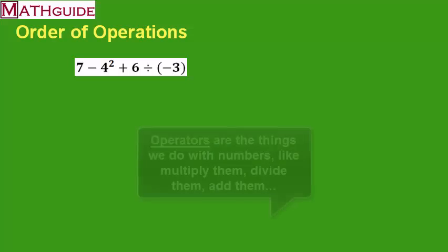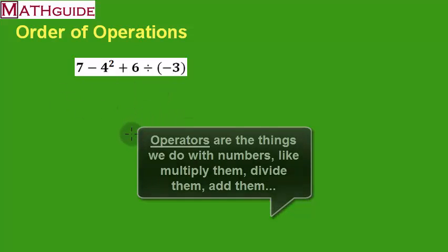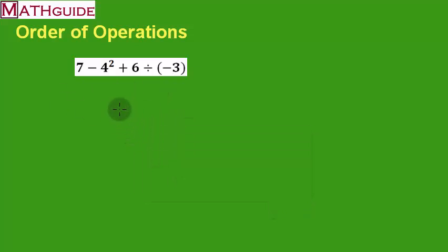What are operators? Well, operators are these: multiplication, division, adding, subtracting, all of those things that we do with numbers are called operators. So when we have several operators going on with one particular problem like this one, there is an order in which you attack this problem and carry out these operations.